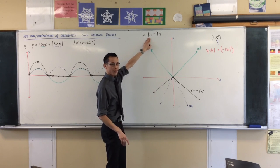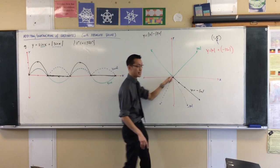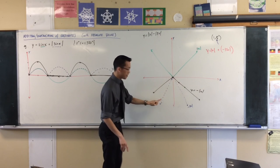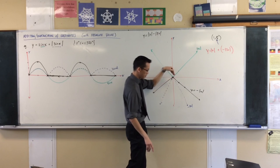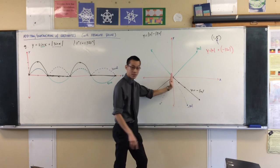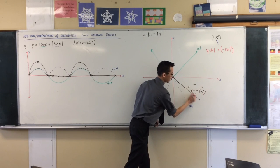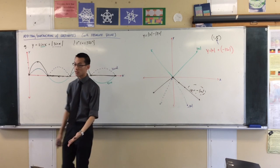So being that this one switches from negative x to x, and this one switches over from 2x to negative 2x, at exactly the same point, you can just put them together and you just get a new piecewise function. It's the same thing.